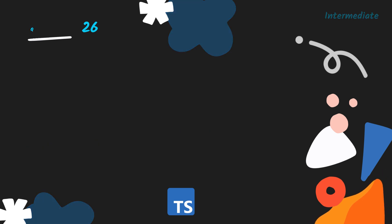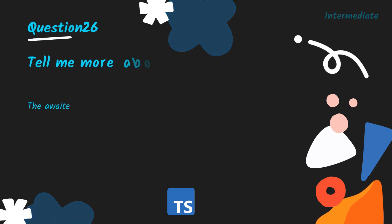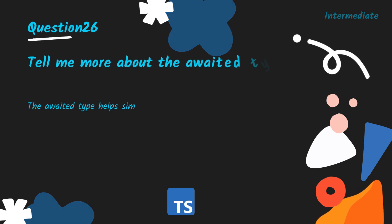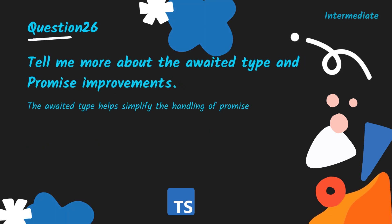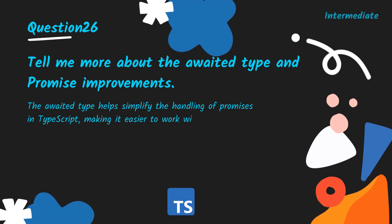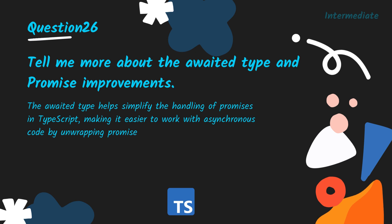Tell me more about the awaited type and promise improvements. The awaited type helps simplify the handling of promises in TypeScript, making it easier to work with asynchronous code by unwrapping promise values.